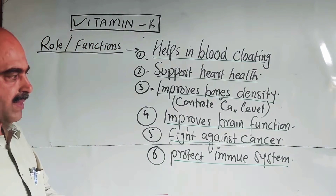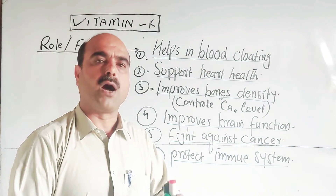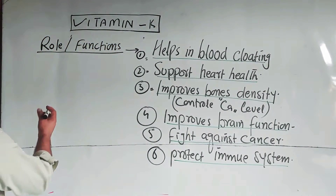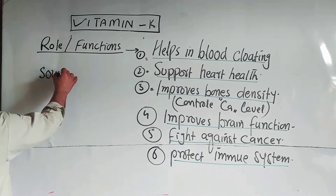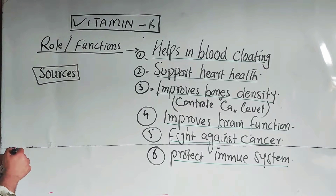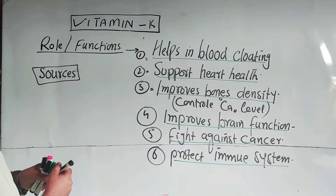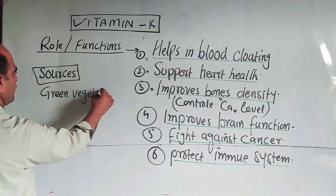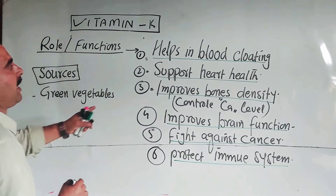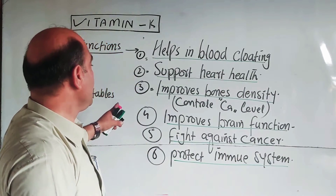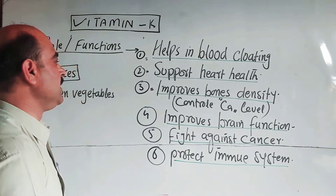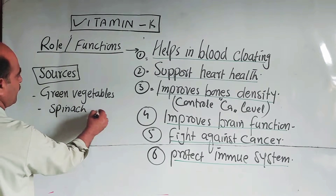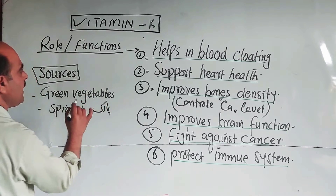Now, students, we have different sources of Vitamin K. The main sources — the first and foremost source is green vegetables. Green vegetables are the main source of Vitamin K1. These include soya beans, spinach, spinach powder, green leafy vegetables, cabbage, and other green vegetables.